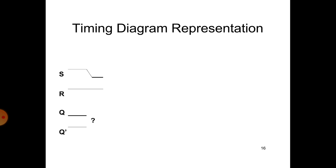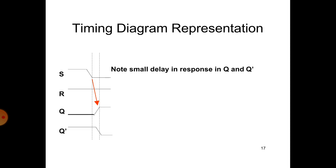S means high to low state. R means high state. Q means low state. Q̄ is in transition state. In the timing diagram representation, there is a small delay in response in Q and Q̄. That is called the transition state. S will be the same, R will be the same, and there is a timing delay response in Q and Q̄.